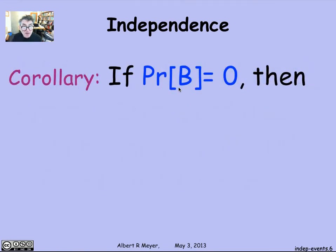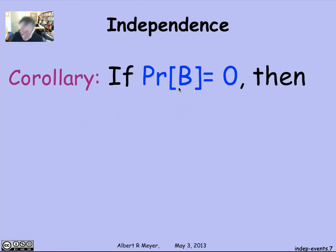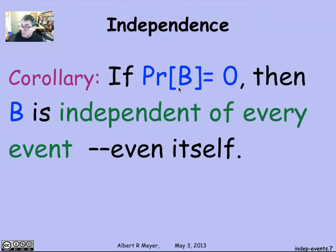Now another fact that holds is that if the probability of B happens to be zero, then vacuously B is independent of everything, even itself, which isn't important but is a small technicality that's worth remembering by that definition.